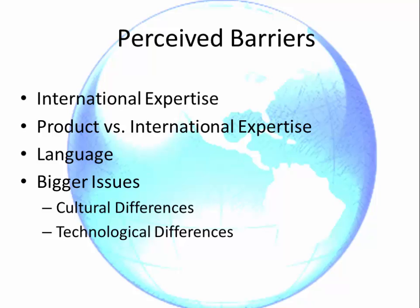This chapter concludes with perceived barriers — these are not actual barriers but are perceived by many. International expertise can actually be learned or outsourced; you can hire someone for the expertise needed, including language. You can use an interpreter. However, bigger issues are actually relationship skills, technical skills, work ethic, and knowledge of the other country's laws and customs. Cultural differences, especially relationship skills, will be examined in depth later.